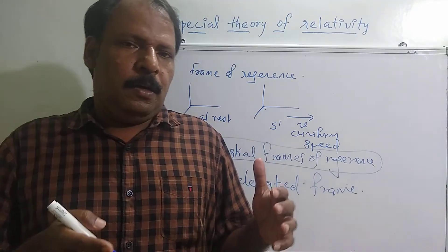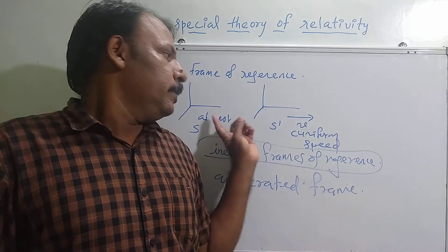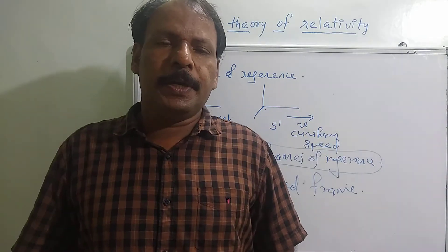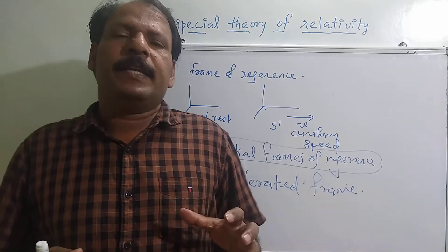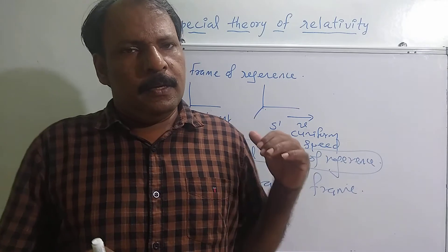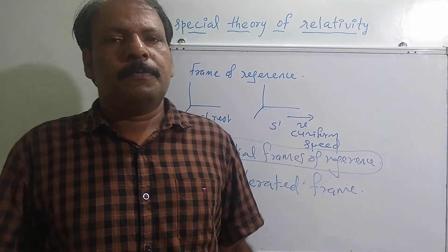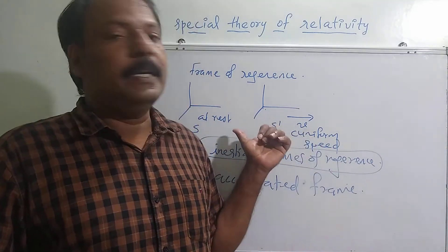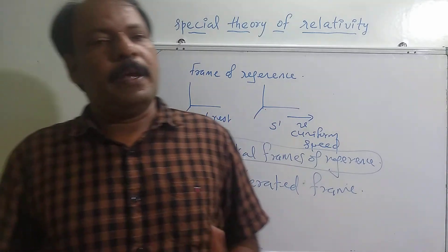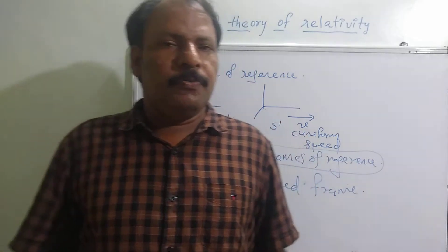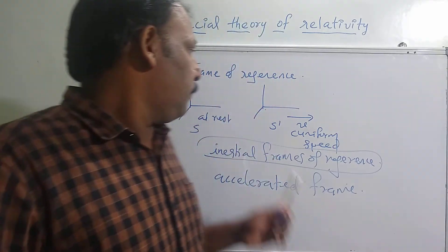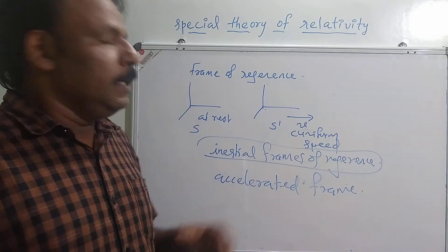Inertial frames are frames of reference moving with uniform speed relative to each other. When we take an isolated particle, that particle will not experience any force when observed from an inertial frame. So an inertial frame is a frame of reference with respect to which an isolated object will be free from all forces. Such a frame of reference is called an inertial frame.